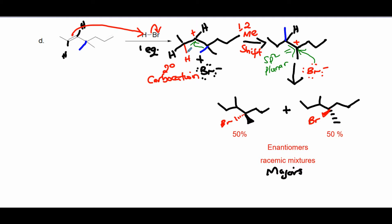Check the most substituted neighboring carbon. This one is tetrasubstituted while the other is monosubstituted, so shift from the more substituted neighboring carbon. Shift the methyl group in blue — exchanging positions between the methyl and the plus sign — and you get a tertiary carbocation, which is more stable than the secondary carbocation you had before.